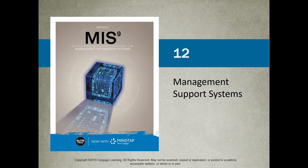Welcome back. This is Chapter 12 of CSIS 2200, Managing Information Systems. Chapter 12 focuses on Management Support Systems — specifically managing information systems to support management. For most of this course, we've talked about managing information systems as it pertains to the operational structure within organizations. Now we're going to look at management support.